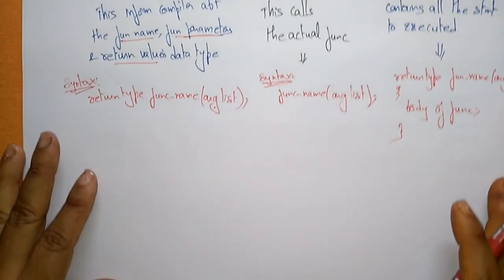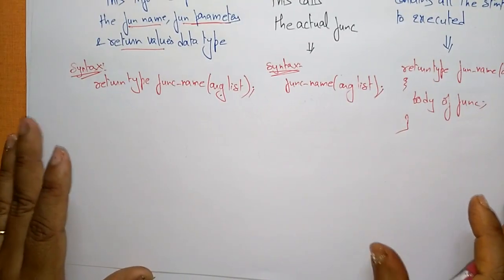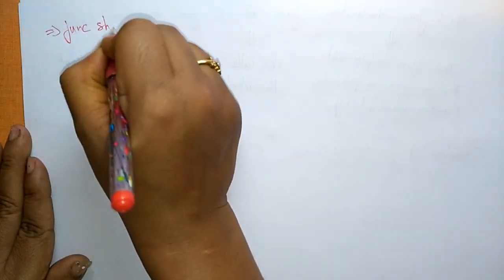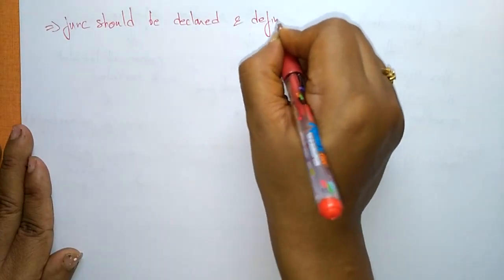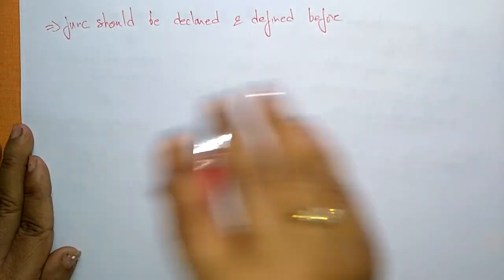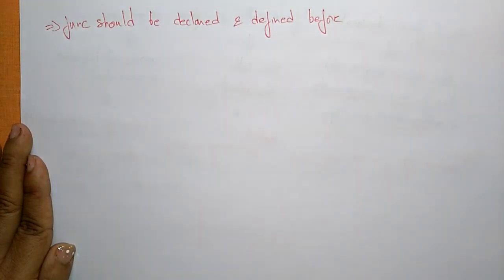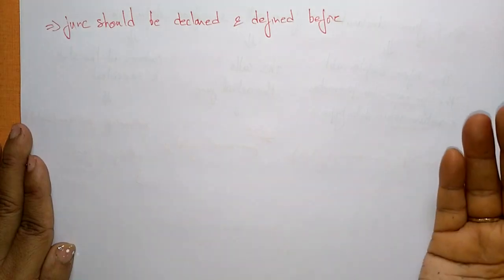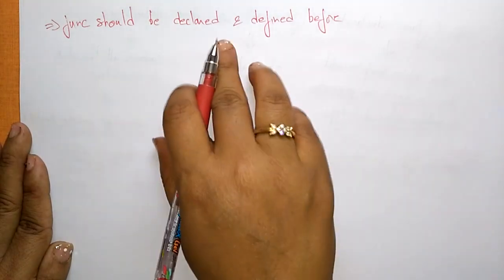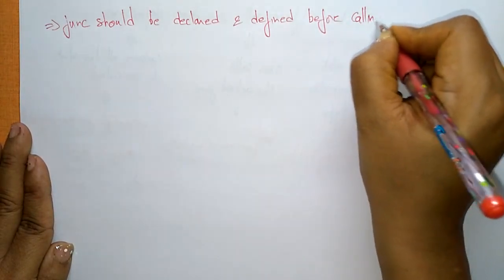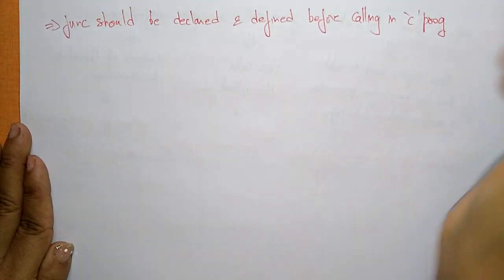Let us see a simple program so you will understand function definition, function call, and function declaration. The function should be declared and defined before calling. Without declaring and defining, you cannot call the function. Just as you call a person by their name, in a C program you must first declare and define a function before calling it.